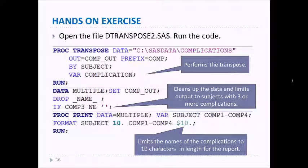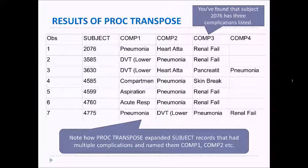We're also going to limit the complication to the first four and also to only the first ten characters in length. That will give us a report we can see on the screen. And here it is. Notice that we have, for instance, subject 2076—we've identified that has three complications: pneumonia, heart attack, and renal failure.